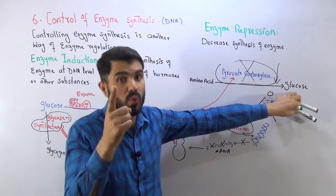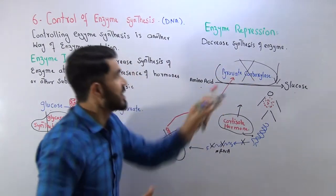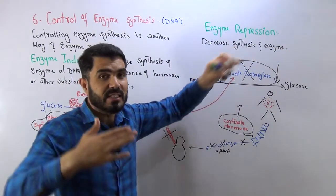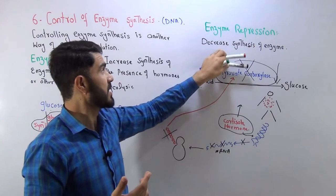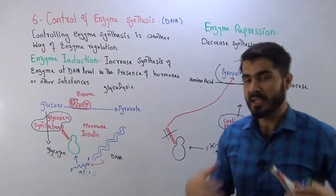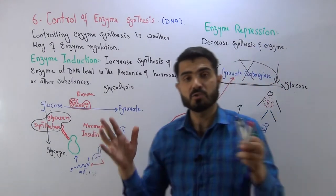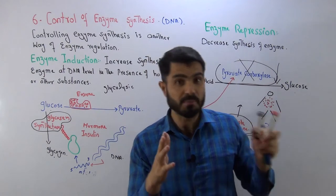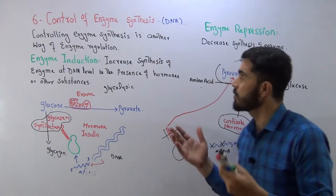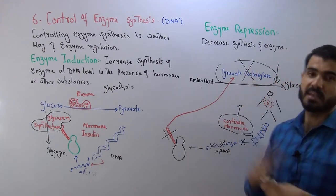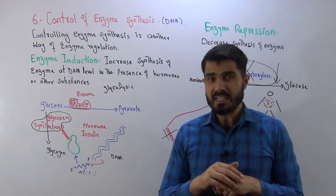So in the presence of excess glucose, the amount of pyruvate carboxylase decreases — this is called enzyme repression. The decrease in enzyme amount due to something like glucose or another substance is called enzyme repression. This shows that enzymes inside our body are regulated in a variety of ways. This is especially important for MBBS students studying drugs from the pharmacology point of view. I hope you understood the control of enzyme synthesis, enzyme induction, and enzyme repression. Bye bye.